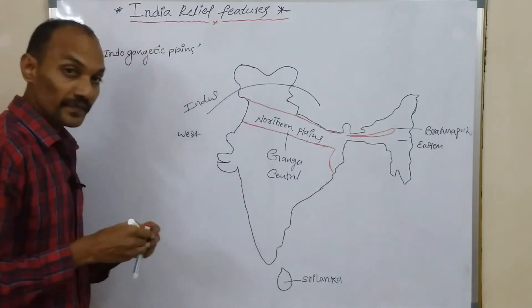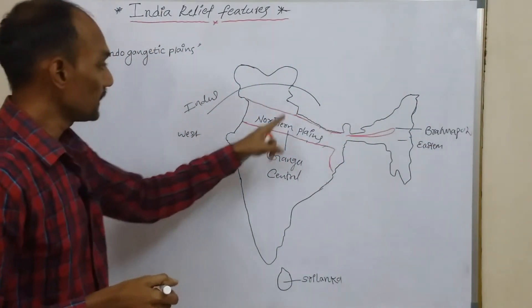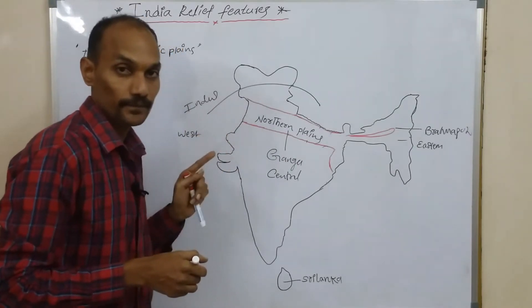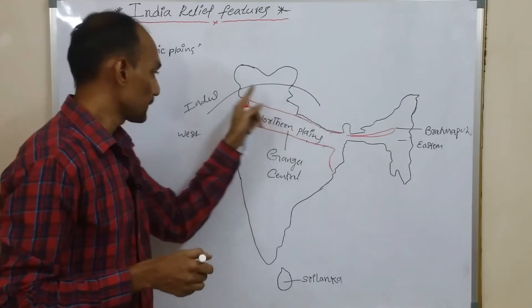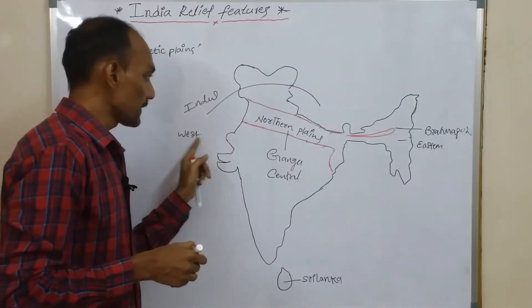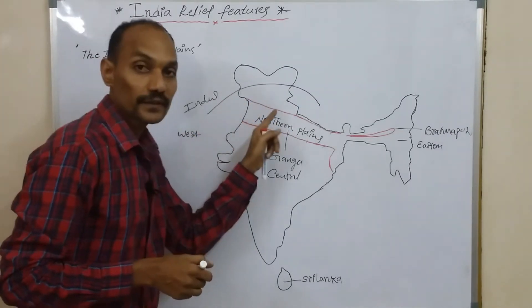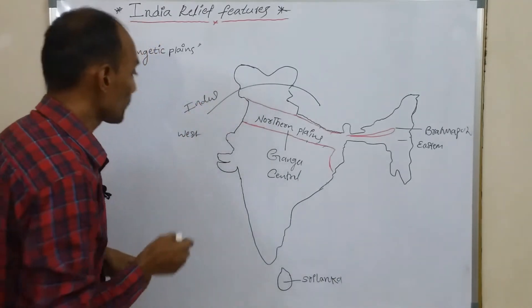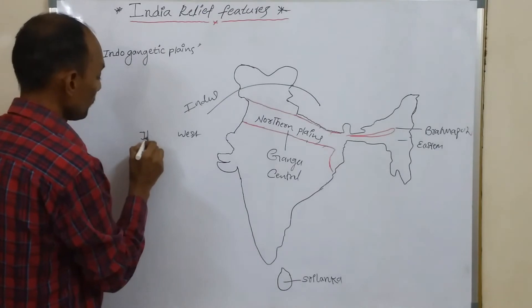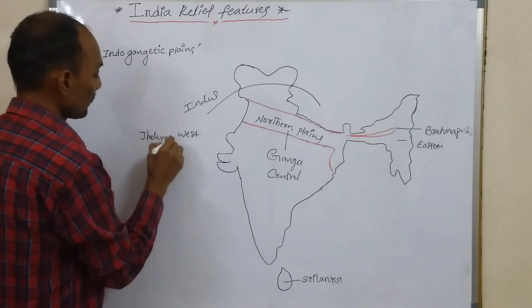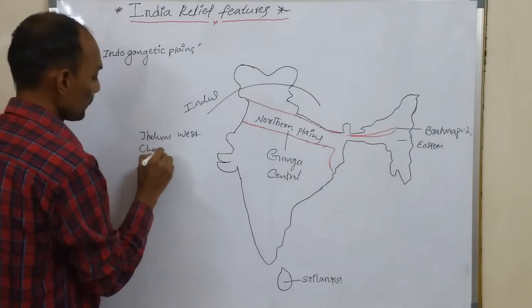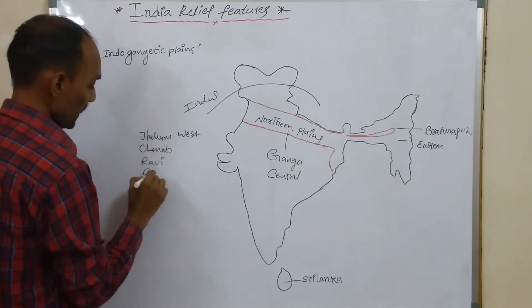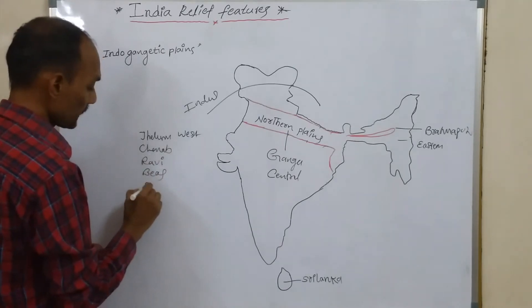The western part is the Indus River Basin, formed by the Indus River and its tributaries. The tributaries of the Indus River Basin are Jhelum, Chenab, Ravi, Beas, and Sutlej.